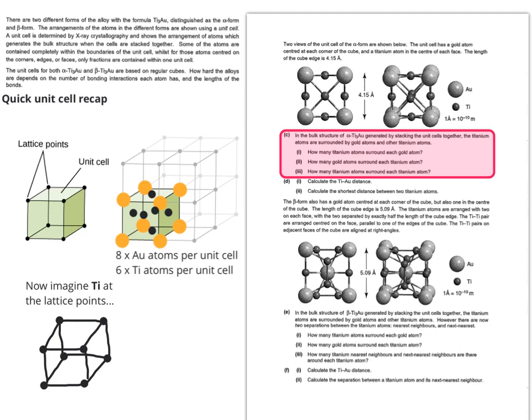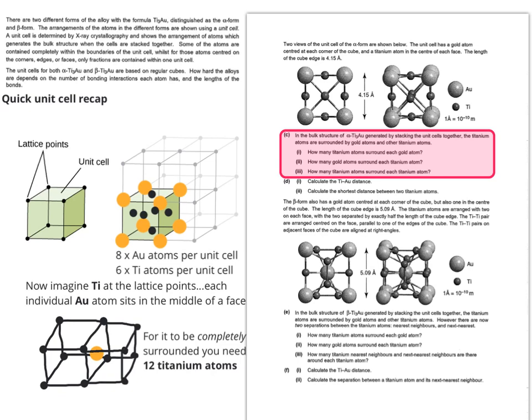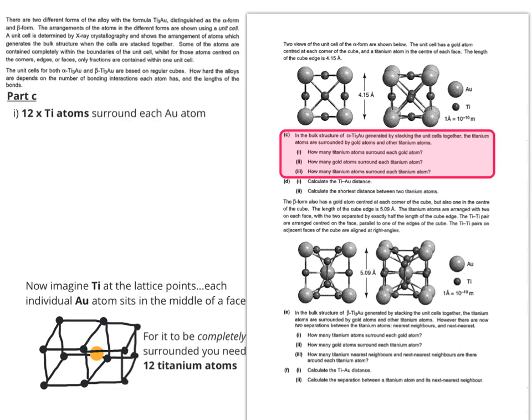This time it asks how many titanium atoms surround each gold atom. Instead of imagining the gold at the lattice points, imagine the titanium atoms at the lattice points. Now we imagine that each individual gold atom sits in the middle of the face, half of it going inside the cube, half of it outside. For it to be completely surrounded, you need 2 unit cells, and that would mean 12 titanium atoms. So 12 titanium atoms surround each gold atom.